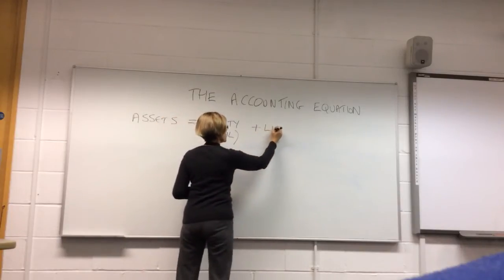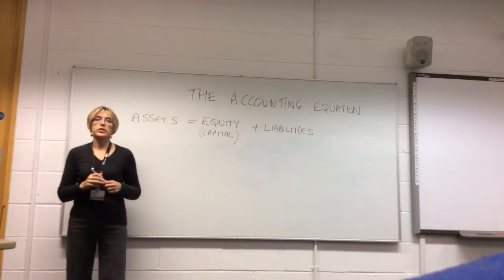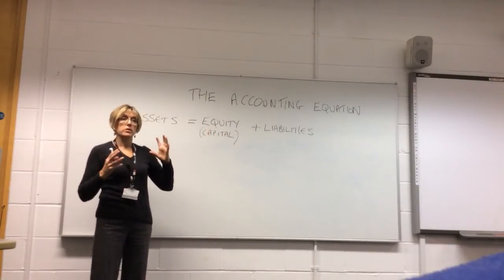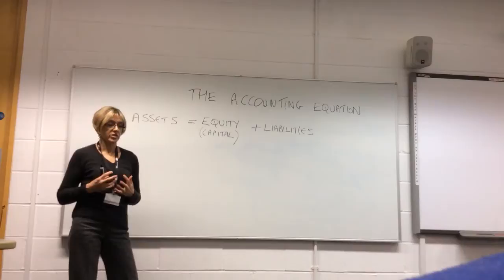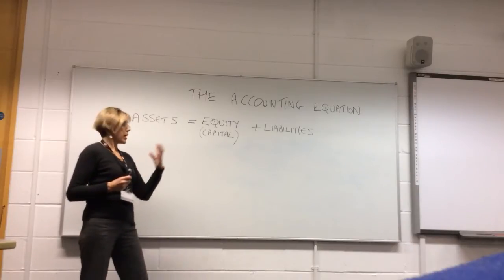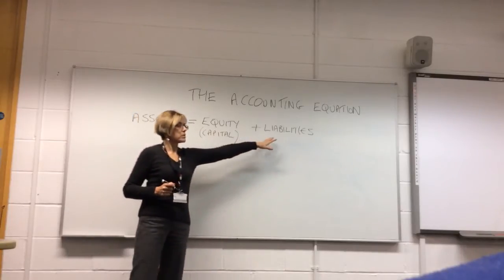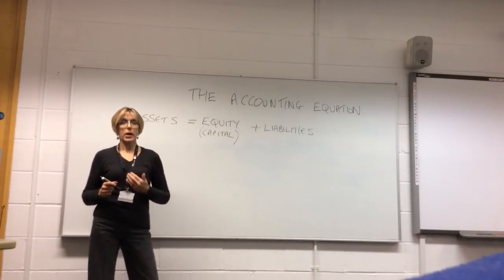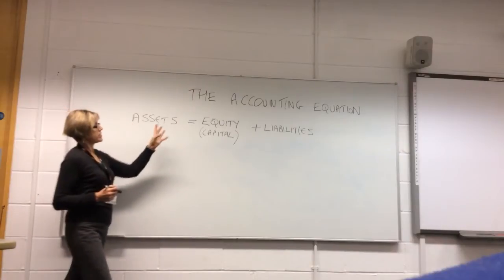Equity and liabilities are claims on the business. Equity or capital is claims on the business by the business owners — that could be shareholders if it's a company, or it could be the owner of a small sole trader business, and we call that owners' capital. Liabilities are money we owe to people outside the business, such as banks.